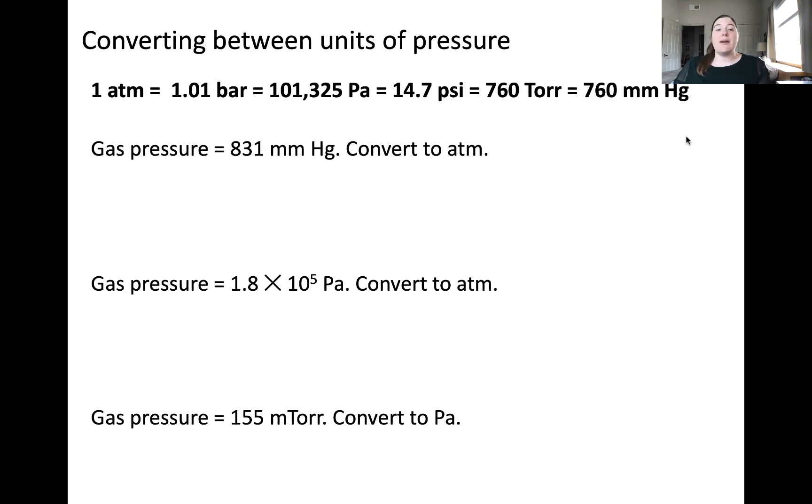Let's review these problems one by one. In the case of millimeters of mercury and atm, we can tell from this conversion factor chart above that one atm is equal to 760 millimeters of mercury. Millimeters of mercury go on the bottom so that units cancel. And when we divide 831 by 760, we get 1.09 atmospheres. This answer makes sense because 831 is on the same order of magnitude as 760, and so being just above one atmosphere is rational.